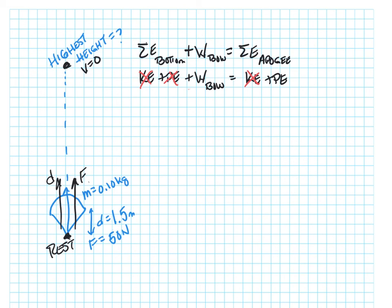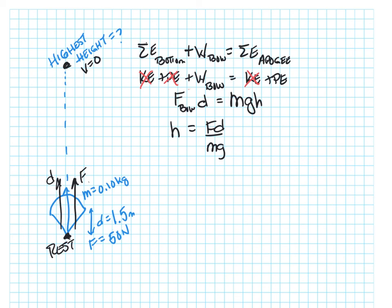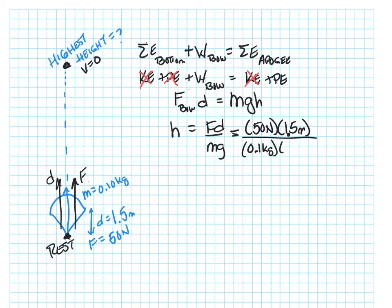So the formula is: force of the bow times its distance equals mgh. I'm looking for the height, so I can isolate the variable: h equals F times d divided by m times g. That's going to be 50 Newtons times 1.5 meters — I pulled the bow back one and a half meters — divided by the mass of the arrow, 0.1 kilograms, times g, 9.80 meters per second squared. When I do the math, I get a height of 76.5 meters.